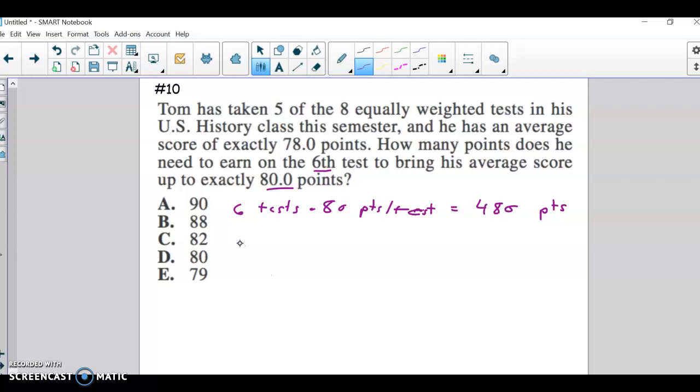Okay, and then how many points does he have? Well, we don't know each test, but we know that he averaged this. So basically, if you took his points so far, divide it amongst the 5 tests, you get an average of 78, right? So then if we just take it times 5 on both sides, that'll get you how many points he has earned so far.